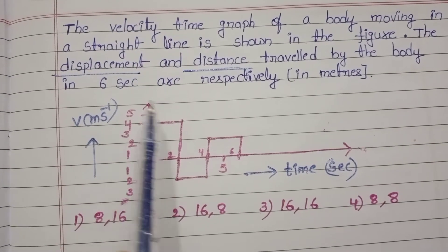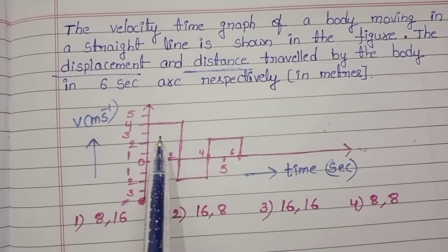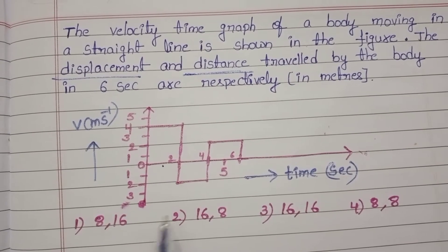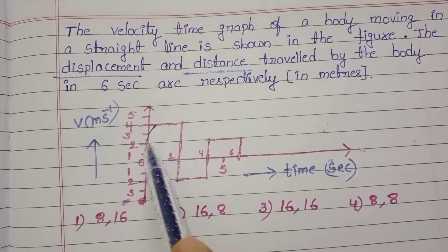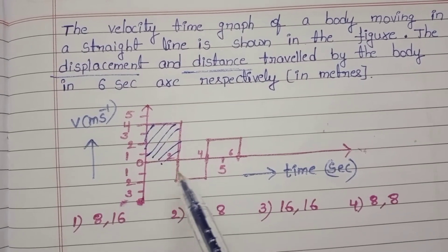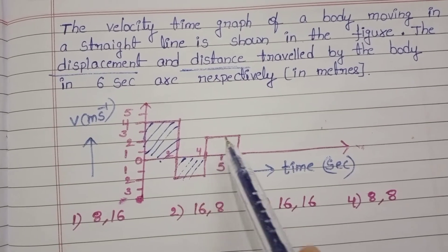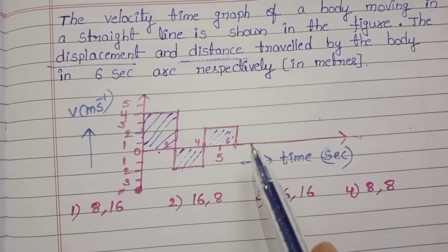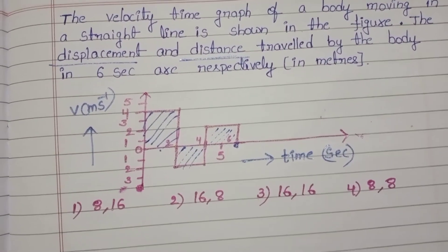Observe the graph. This graph has area on both the positive side and the negative side. So we find the area of the first part, second part, and third part. In total, over 6 seconds, we want the combined areas.